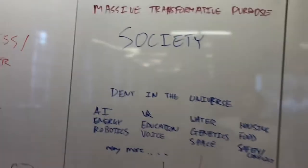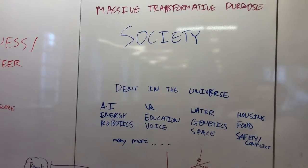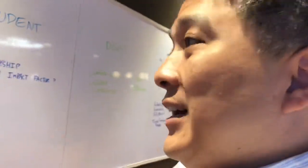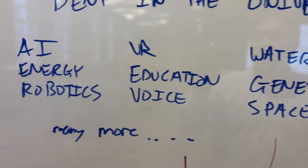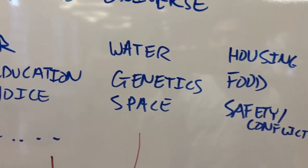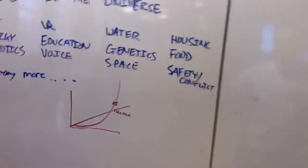So kind of massive transformative purpose. There's so many things going on in society that need help. AI is just one example. There's energy, robotics, virtual reality, education, voice acting, water, apps, genetics, space, housing, food, safety, and conflicts. I mean, that's just a... there's many, many more, right?